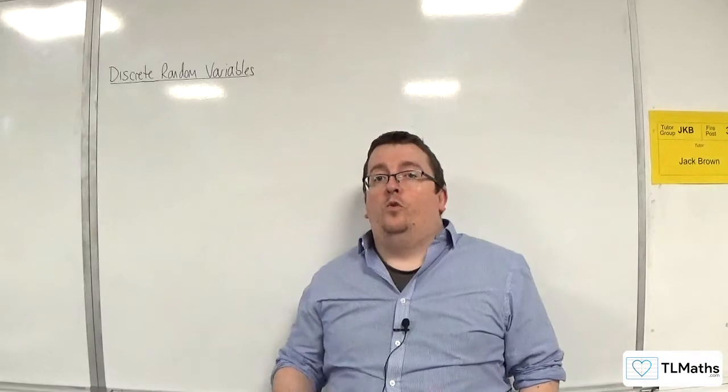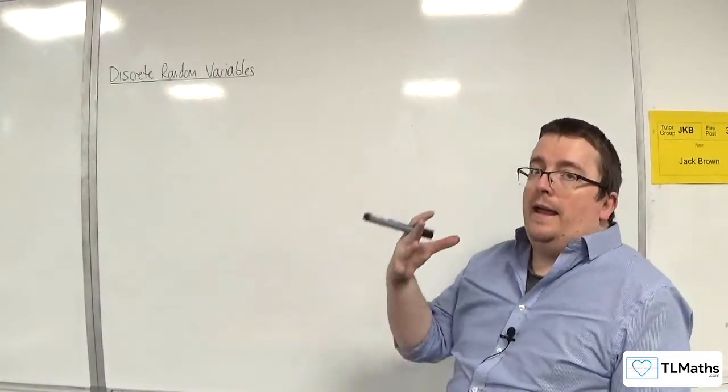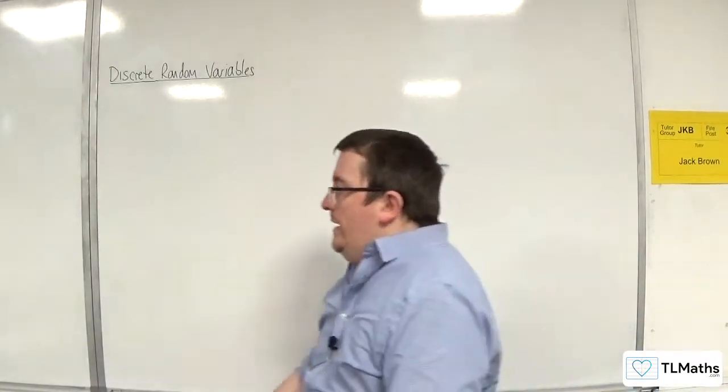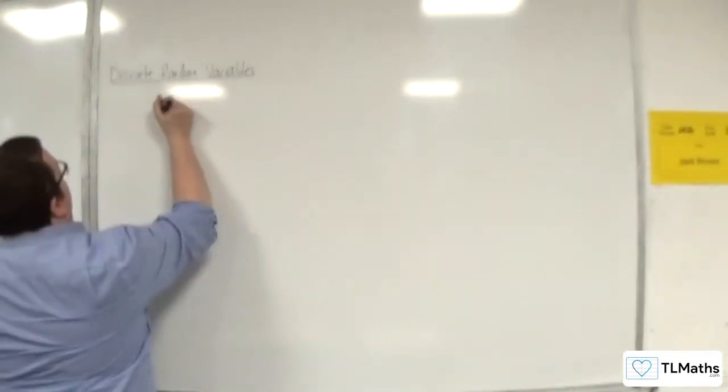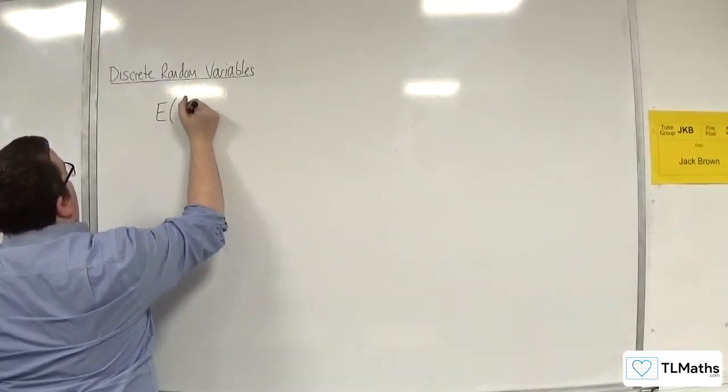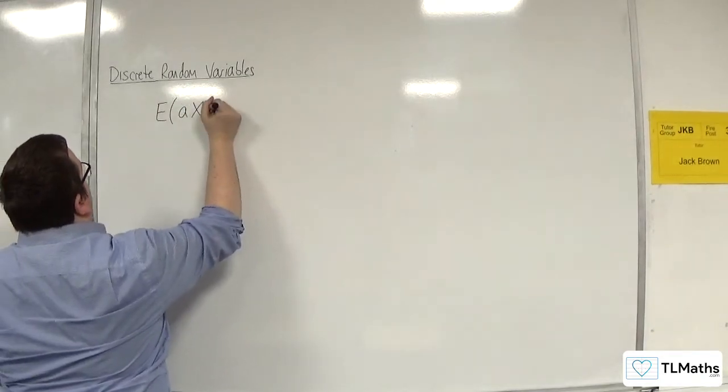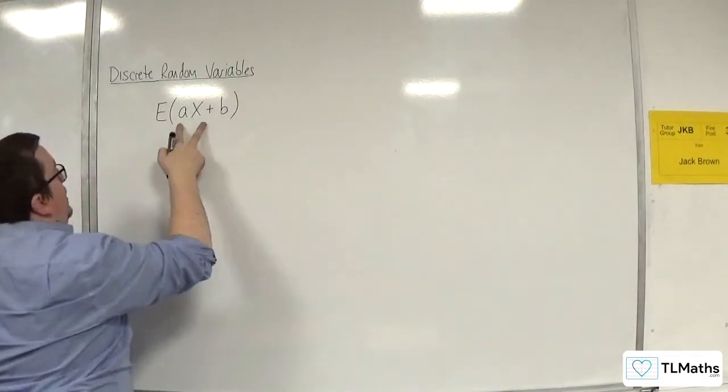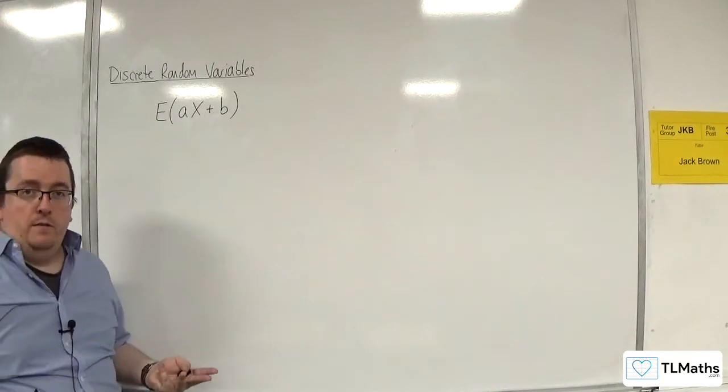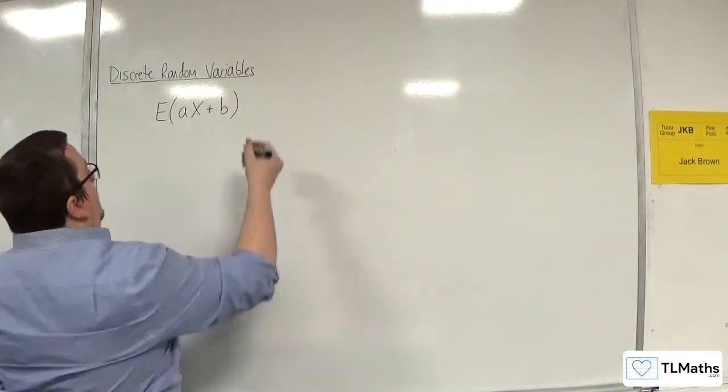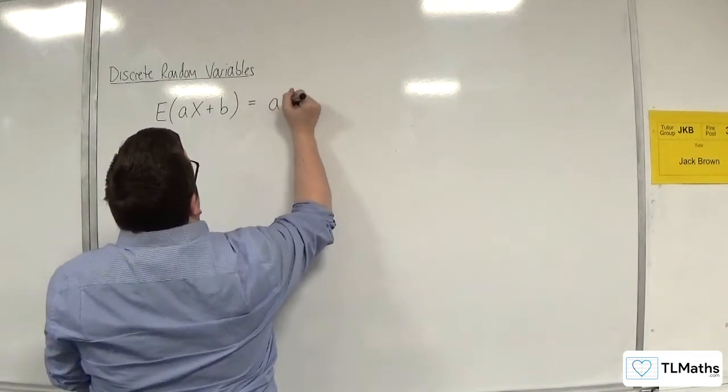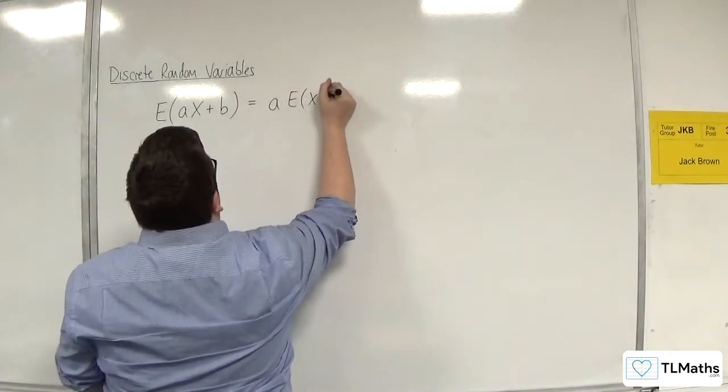Now in the previous video we explored E(x) and we came to a result where in general we can now say that E(ax + b), so essentially a linear coding of the random variable x, is equal to a times E(x) plus b.